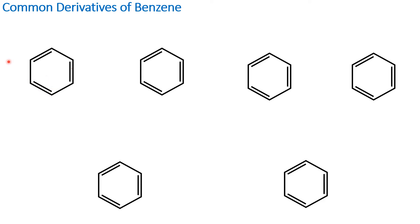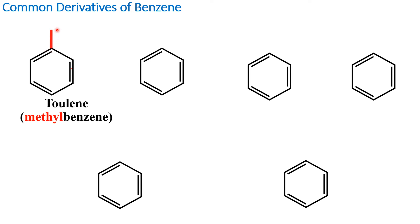The first benzene derivative we're going to look at is called toluene, or methylbenzene. As you can see, there is a substituent sticking out of the benzene ring, and we know that one substituent is called methyl. So: methylbenzene, or toluene.